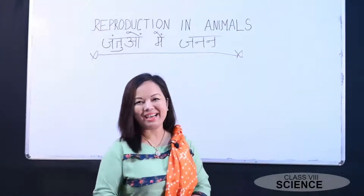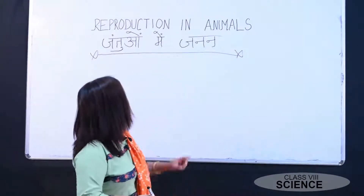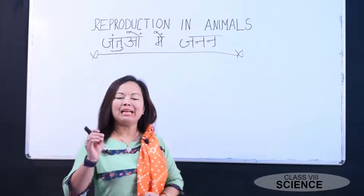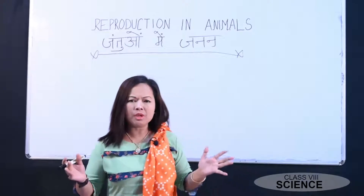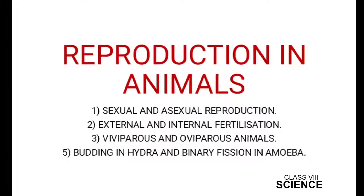Good morning students, this is your science teacher Meethu and today we are going to study the topic reproduction in animals, or in Hindi 'Jantuvu me Janan', from your class 8 science textbook. In this lesson we will talk about sexual and asexual reproduction, external and internal fertilization, viviparous and oviparous animals, and different kinds of asexual reproduction like budding in hydra and binary fission in amoeba.